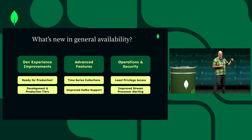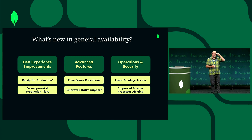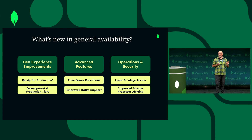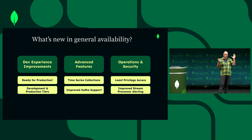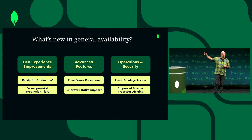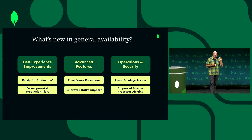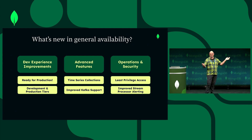A year ago we announced the preview of Atlas Stream Processing. The preview period was amazing — over 1,600 of you came in and used the product. We listened to all the feedback. We've added a ton of stuff for the dev experience: new pricing tiers including a smaller dev instance, native integration for time series collections, dialed-in Kafka support with consumer groups and headers, security improvements, alerting, and observability improvements. We're excited now that we're GA to continue to build.